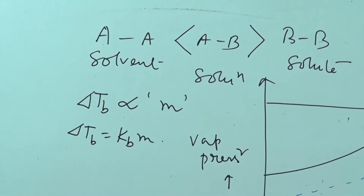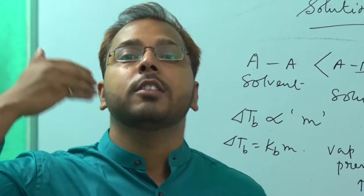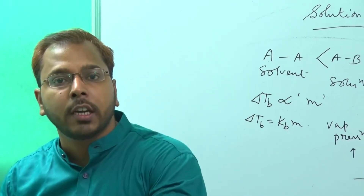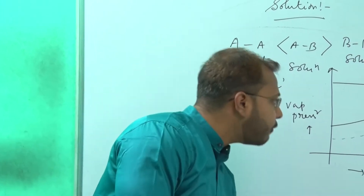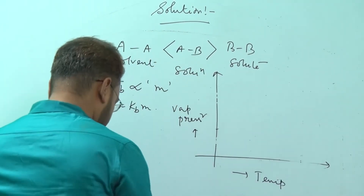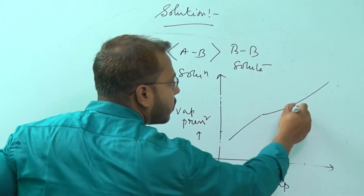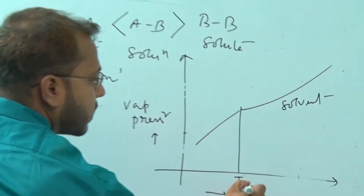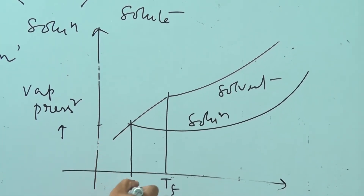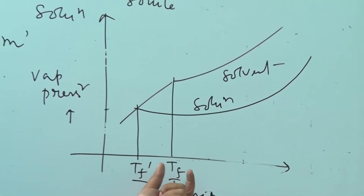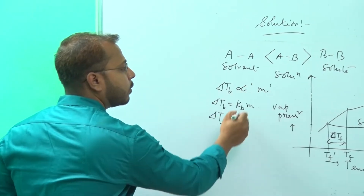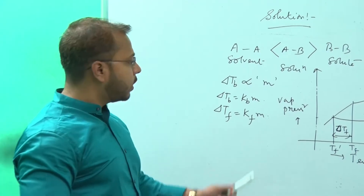Similarly, if the solute does not have a tendency to get vaporized easily, the vapour pressure decreases, and at the same time it does not show a tendency to get solidified. So the freezing point gets decreased. For the curve of freezing point, when the pure solvent touches its freezing point but the solution's vapour pressure is lower, the temperature will be less than the freezing point of the pure solvent. This is known as delta T_F, and delta T_F = K_F × m.